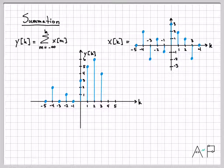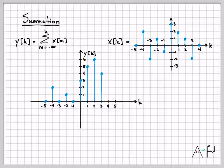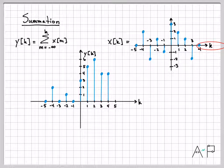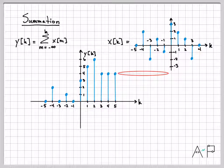Continuing, we reach a value of 4 at time 3. At time 4, the signal x is 0, so 4 plus 0 still gives 4. From there all the way to infinity, x remains 0, so y of k keeps having that same value of 4. This value holds steady forever.